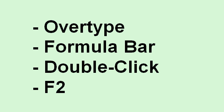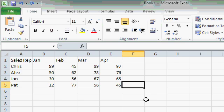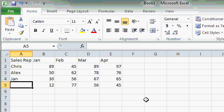So to recap, you can edit the data in a cell by simply over-typing it — clicking on it or moving to it and just typing over it. Or you can use the formula bar, click on the cell, then edit the data in the formula bar. Or you can double-click on a cell and change it right in place. Or you can press the F2 key to go into edit mode. You can erase the data from a cell by using the delete key when you're not in edit mode. For example, let's say I want to delete the word PAT from cell A5 — I'll move there and press the delete key. Notice all of the data has been removed from cell A5.